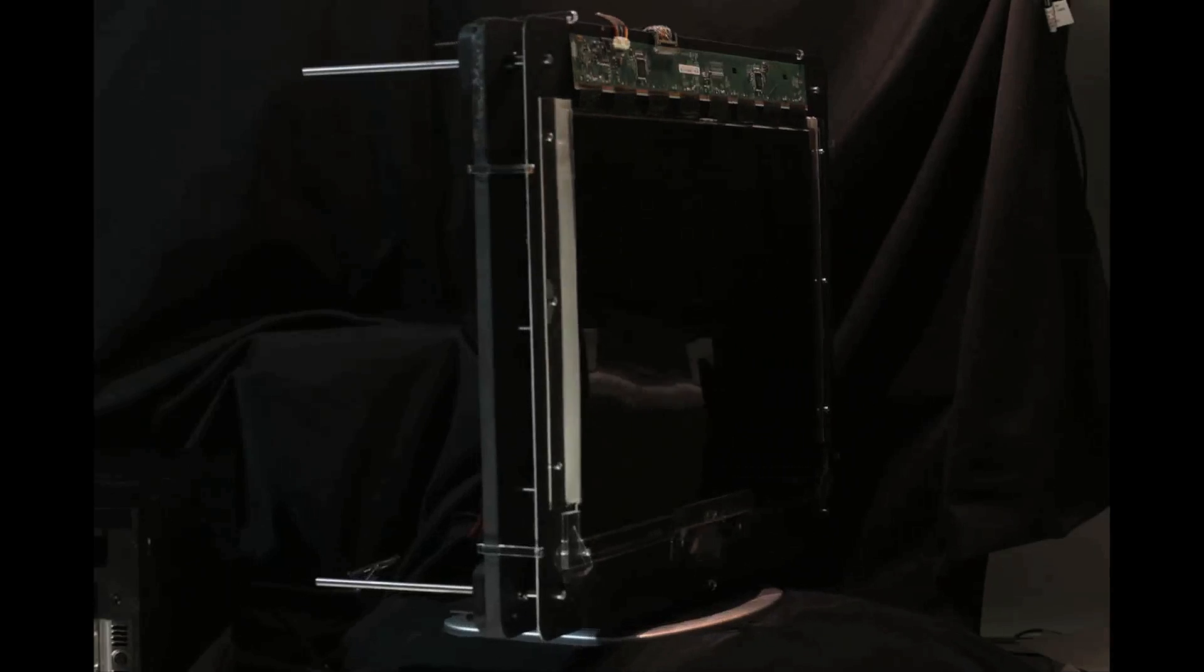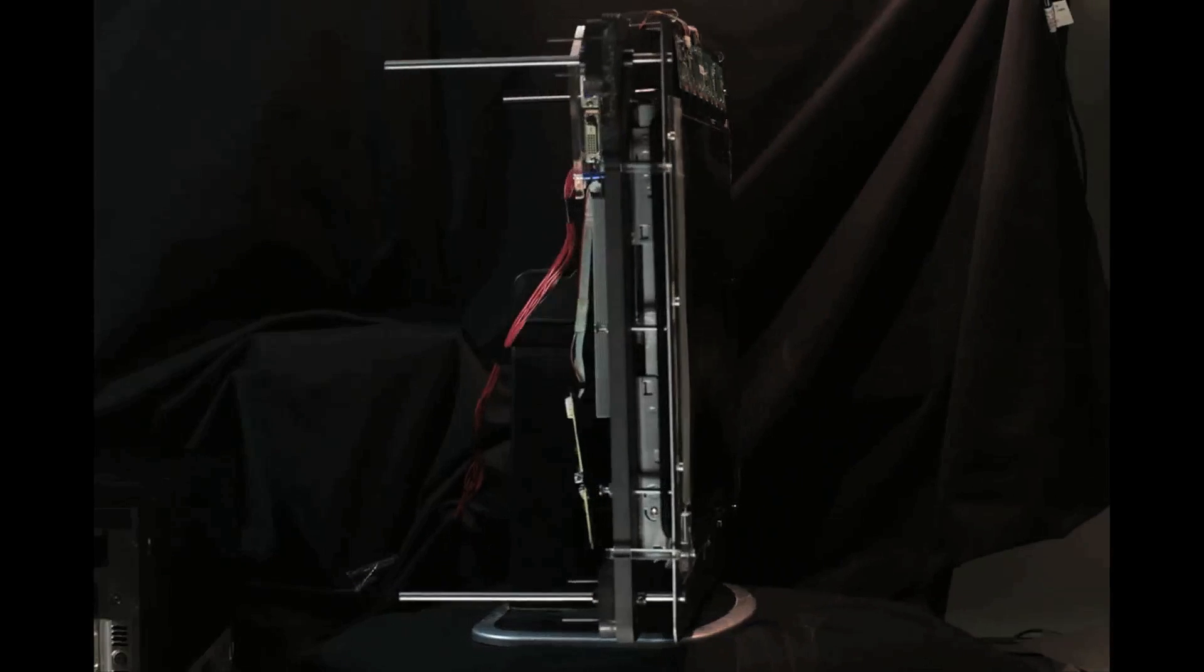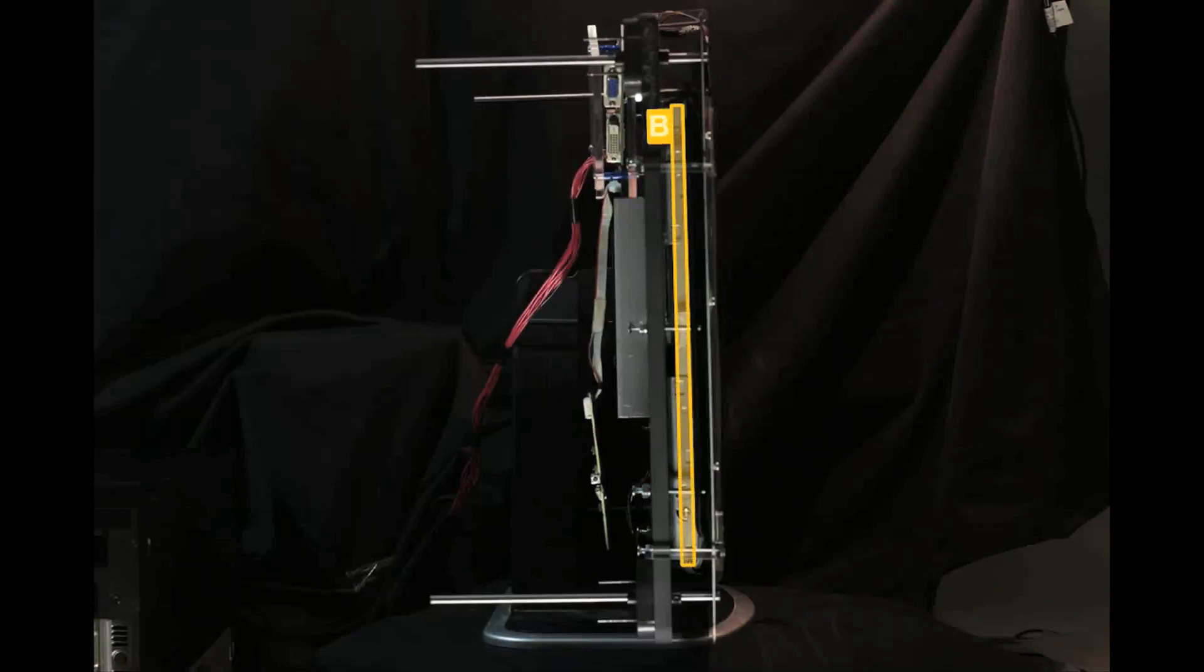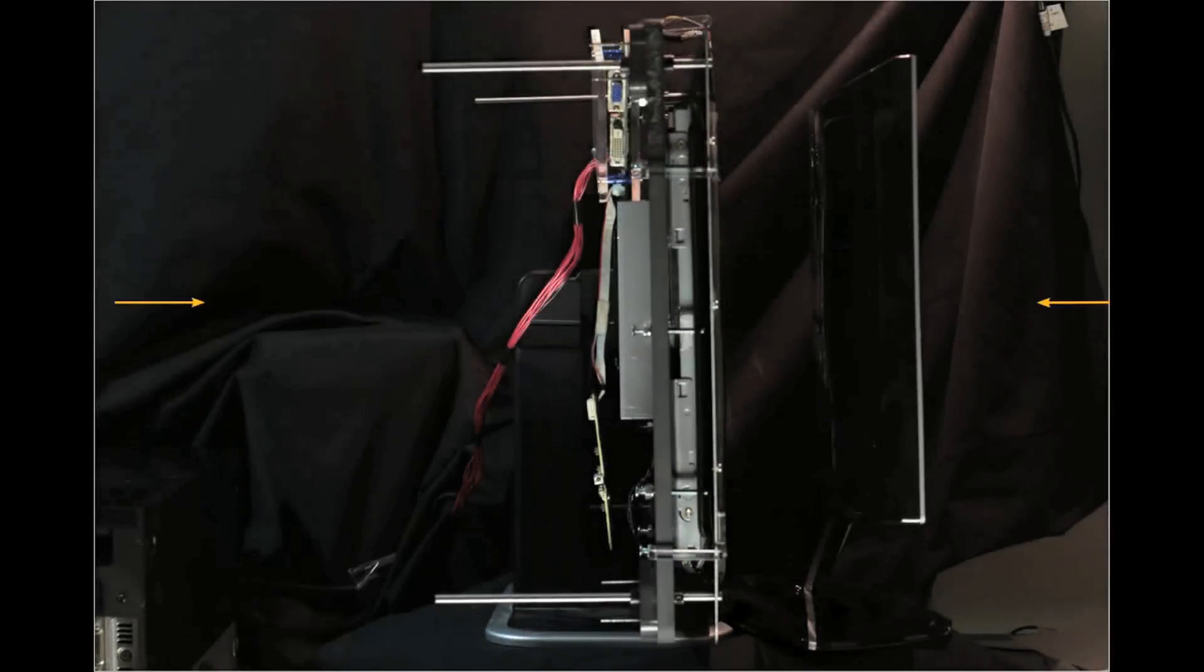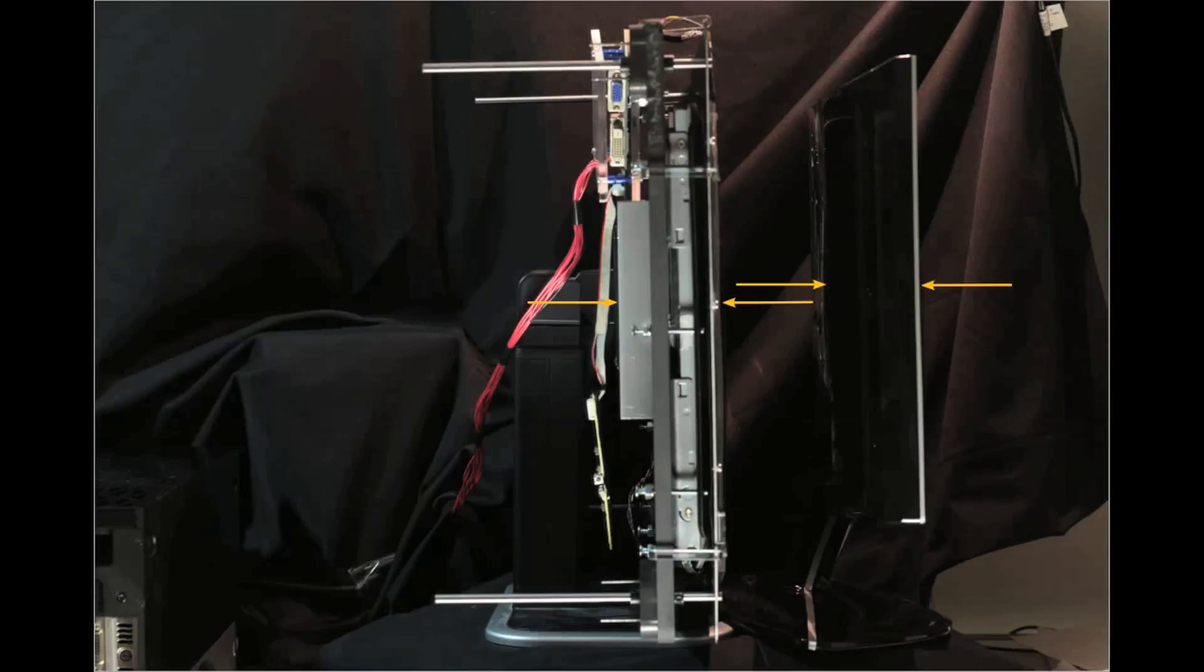From the side, the location of the directional backlight composed of a uniform backlight, LCD, and lenses can be more clearly seen behind the front LCD. Because of the close layer spacing allowed by the directional backlight design, our two-layer prototype has retained the thin form factor of an unmodified LCD panel.